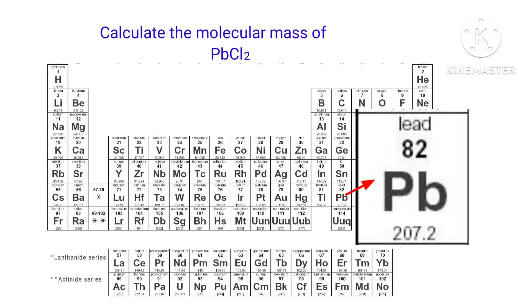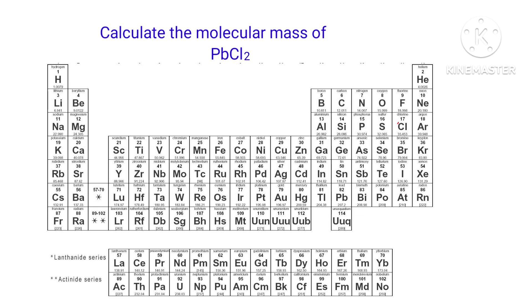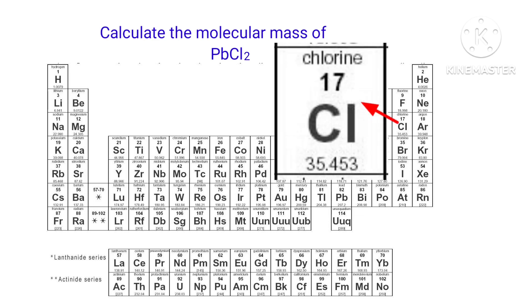The atomic mass of lead is 207.2. The atomic mass of chlorine is 35.453.